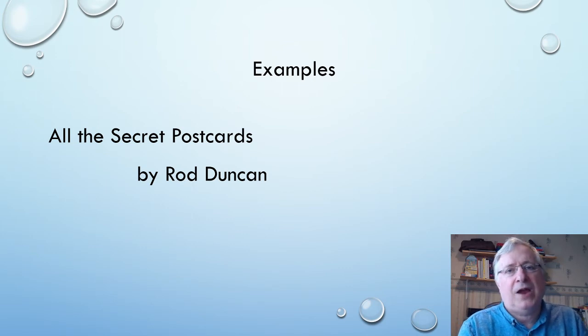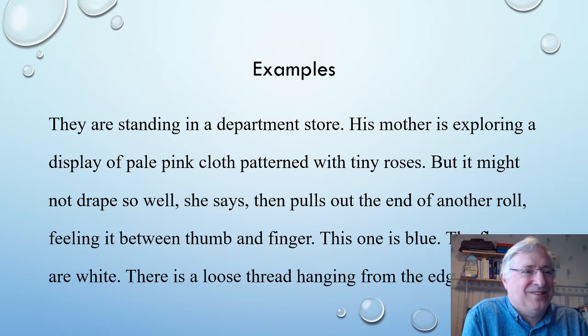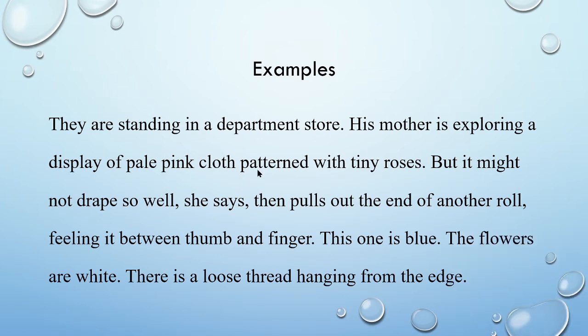I'm going to share three paragraphs from this story and you can see how I use the formula. Here's the first one. They're standing in a department store. His mother is exploring a display of pale pink cloth patterned with tiny roses. But it might not drape so well, she says, then pulls out the end of another roll, feeling it between thumb and finger. This one is blue. The flowers are white. There is a loose thread hanging from the edge.